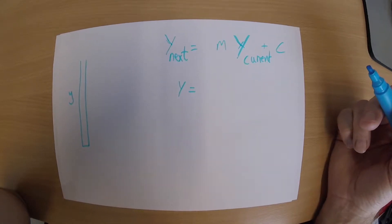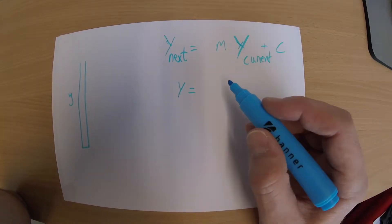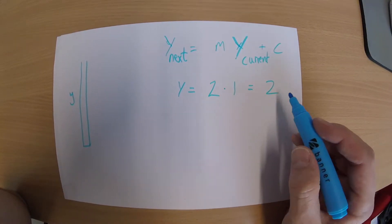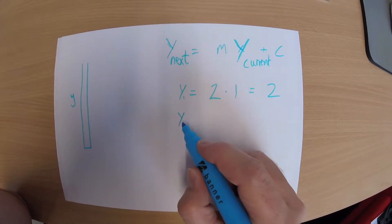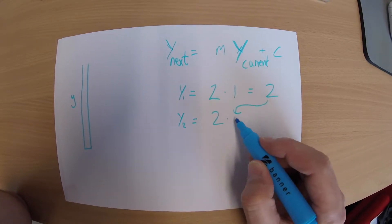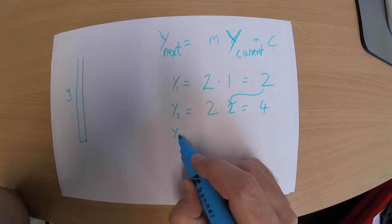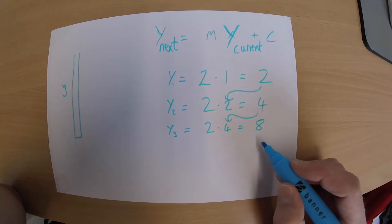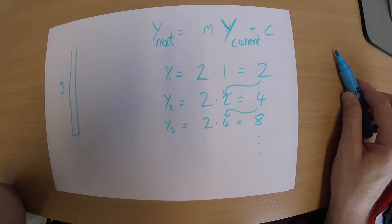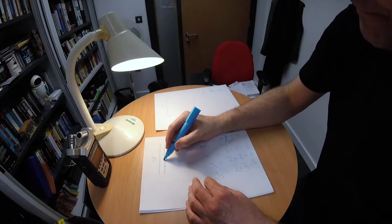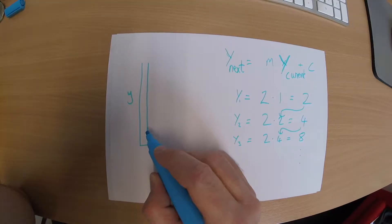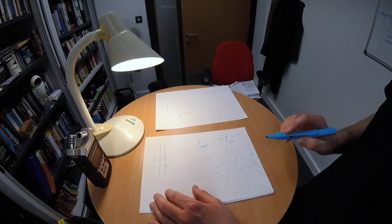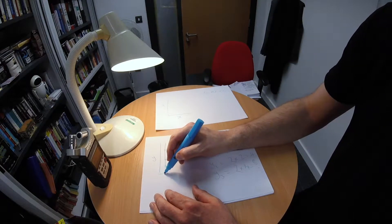So if m was 2 and c was 0, y₁ would equal 2 times 1, which is 2. y₂ would equal 2 times 2, which equals 4. y₃ equals 2 times 4, which is 8, and so on. And we would plot those values here, and you can see that the value is going to race off upwards to infinity.